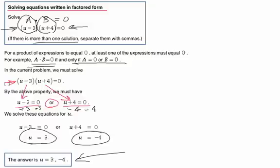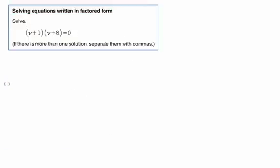Let's look at another example we can work through more directly. We want to solve (v + 1)(v + 8) = 0.